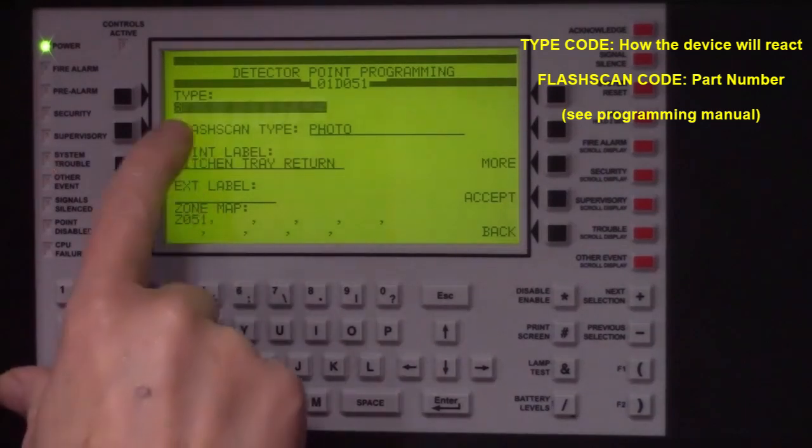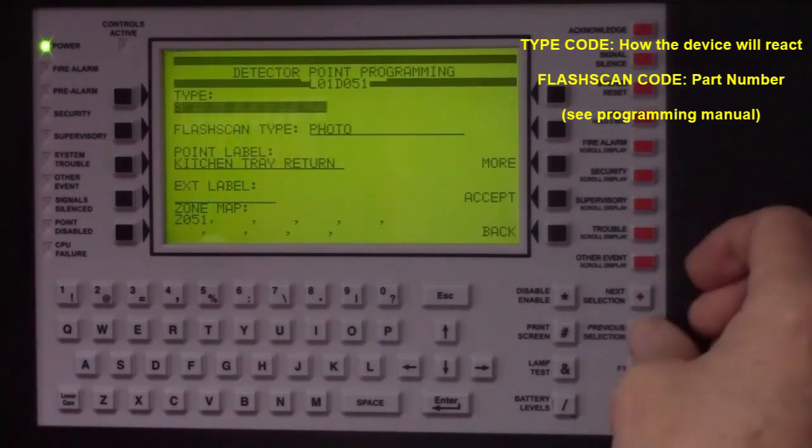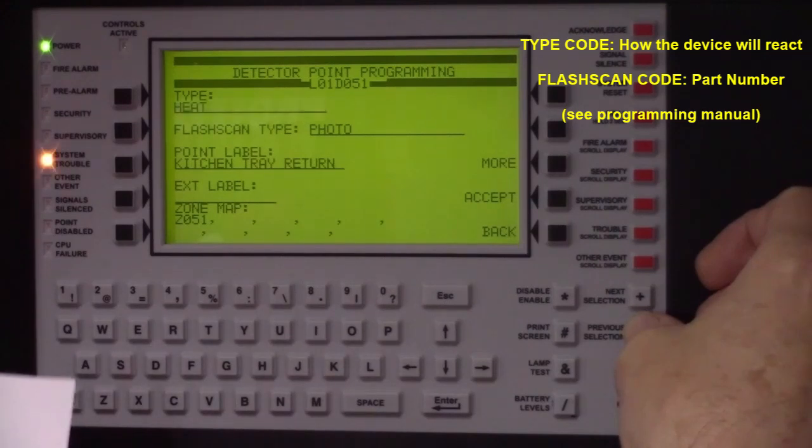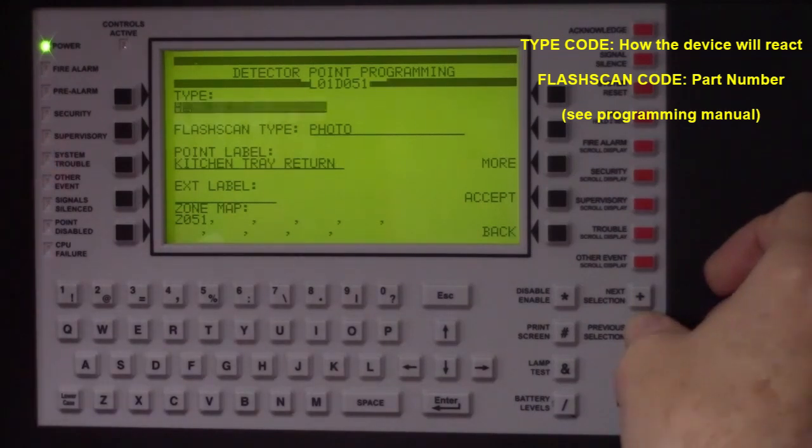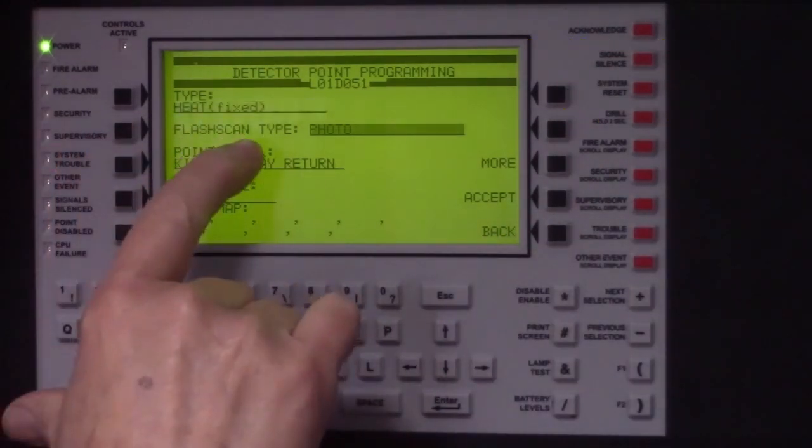This is the type code. We need to change it to a 135 degree fixed temp device. Scroll through the device types. This is a 190 fixed temp device. 135 rate of rise, 135 fixed, and 190 degree with freeze warning. We'll select the 135 fixed temperature and then change the flash scan type to a heat detector. Let's set this incorrectly to high heat on purpose so you can see what happens.